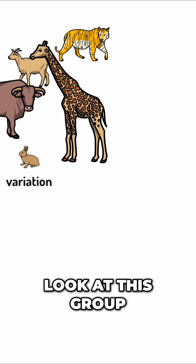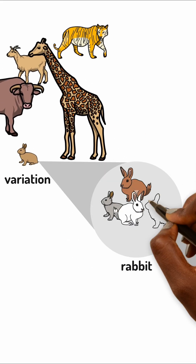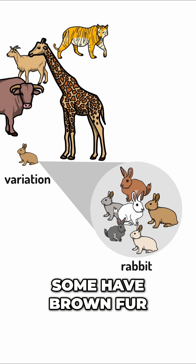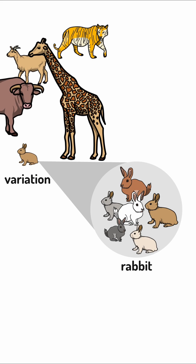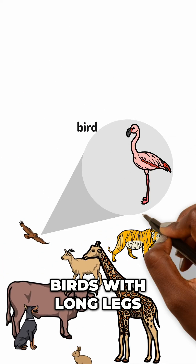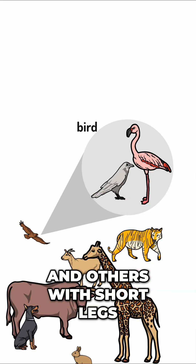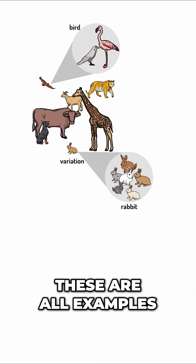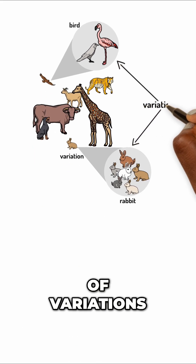Look at this group of rabbits. Some have brown fur, while others have white. Or you might see birds with long legs and others with short legs. These are all examples of variations.